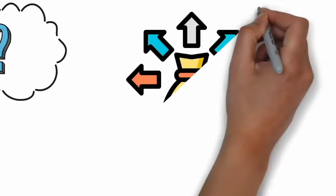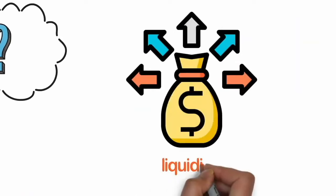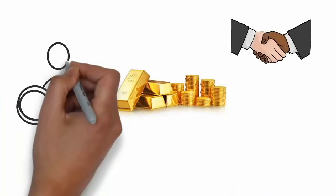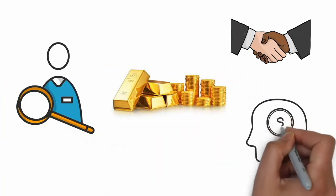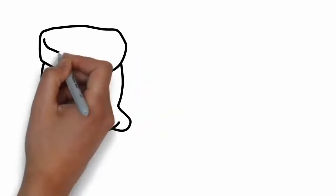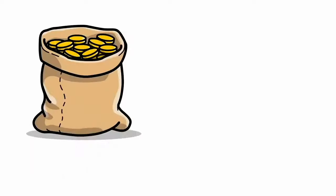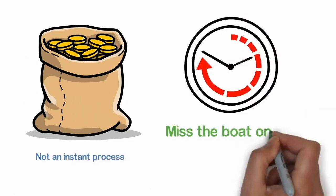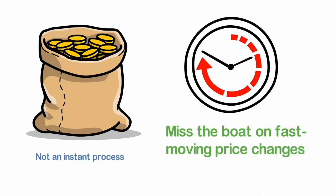Another problem with investing in physical gold is liquidity. Buying and selling gold coins and bullion requires dealers, inspections for confirmation of quality, and knowledge of volatile spot prices. Deciding to offload your gold is not an instant process, and the time needed to complete a transaction securely can mean you miss the boat on fast-moving price changes.